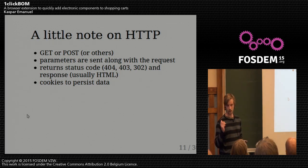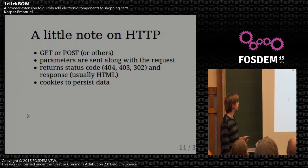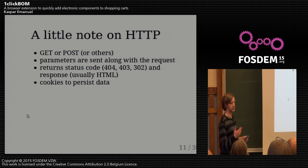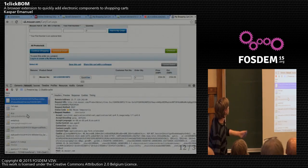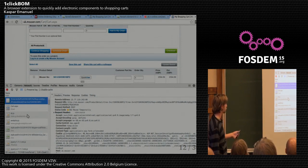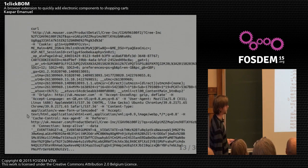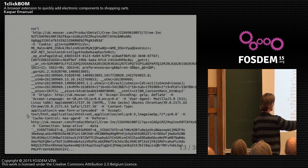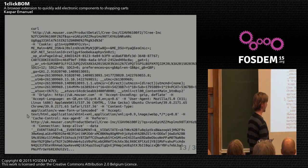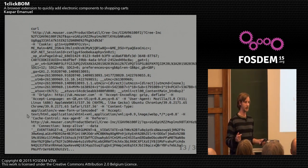Just a quick note on how HTTP works: it's either a GET or a POST request, or some more obscure ones used less often. The parameters you want to pass to the site are sent along with a request, and it returns a status — some of you have surely seen a 404 or 403 status. The return status, the response — usually HTML — and cookies are used to persist data during your session. I spend a lot of time in the browser tools debugging HTTP requests, looking at what these sites actually send when you add components. It's not a very clean API. For instance, to add a component to the Mouser website, this command goes on for 20,000 characters, which is the view state of the web application — I have no idea what that's for, but I have to retrieve it and send it in order for my request to be accepted.